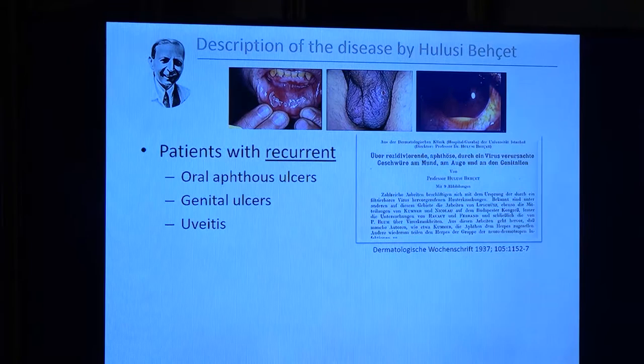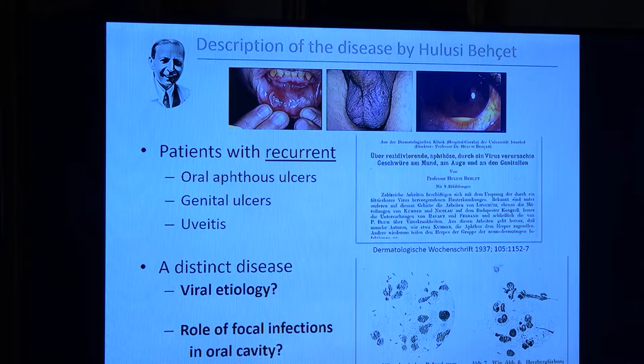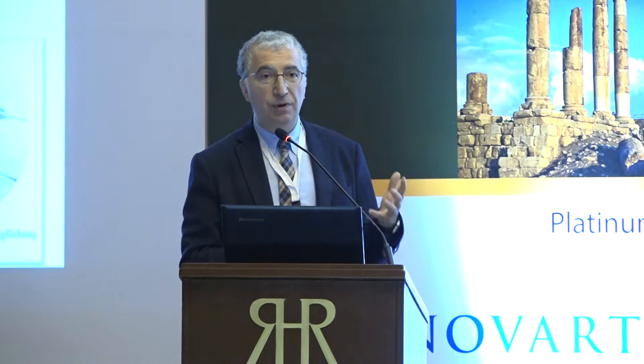The disease was first described by Hulusi Behçet, a dermatologist, in 1937, based on his observations in three patients with recurrent oral aphthous ulcers, genital ulcers, and uveitis. He discussed the possibility of a viral etiology, mainly because of the distinct features he observed in those patients, especially uveitis. He also mentioned that treating oral cavity infections prevented recurrences. So viral and bacterial infections were considered originally as triggers of the disease.